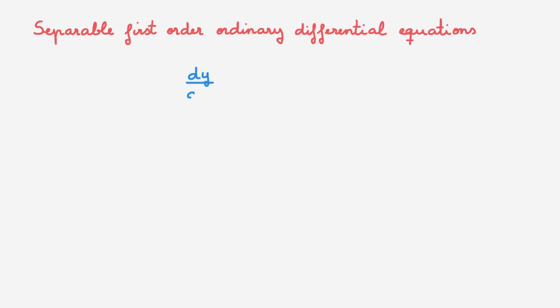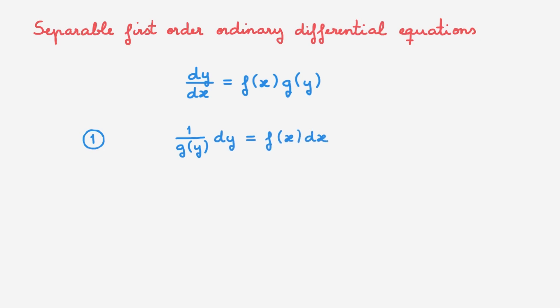Let's summarize everything we've learned. We have looked at separable first-order ordinary differential equations, which take the form dy/dx equals f(x) times g(y). The solution involves two steps: first, separate the terms by putting all y's on one side and all x's on the other; second, integrate both sides — the left-hand side with respect to y and the right-hand side with respect to x. With this strategy, we can solve any such equation. Links to example solutions are in the description.